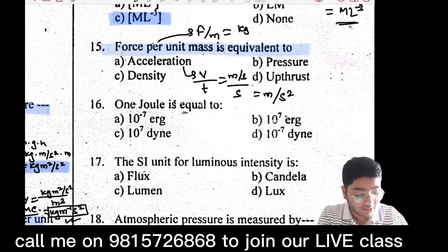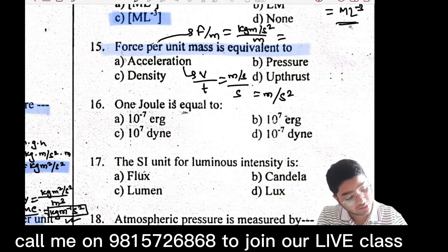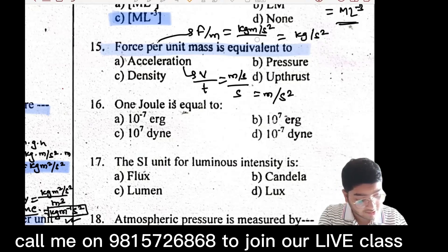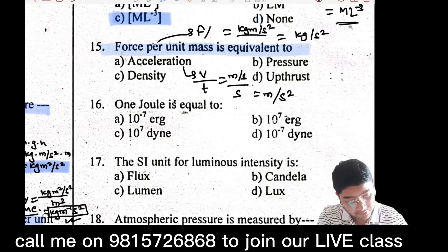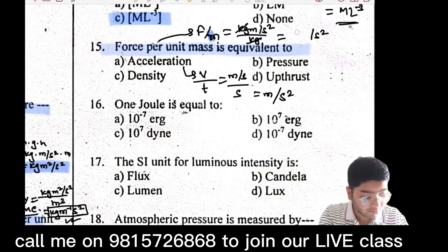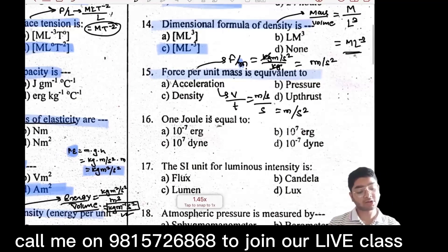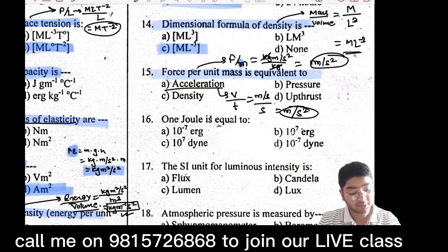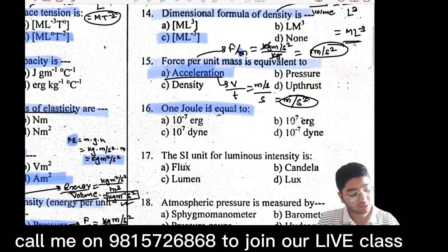Force upon mass: kg·m·s⁻² divided by kg gives m·s⁻² — meter per second square. This confirms the answer: acceleration is meter per second square, i.e., L·T⁻².